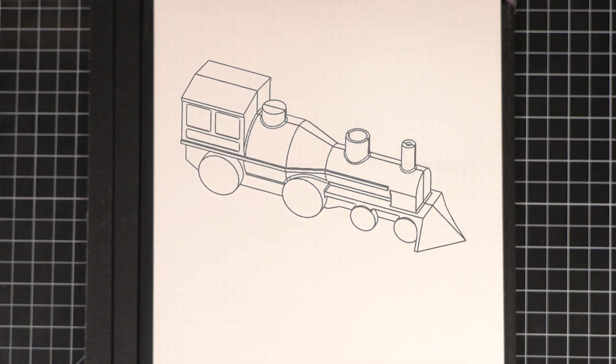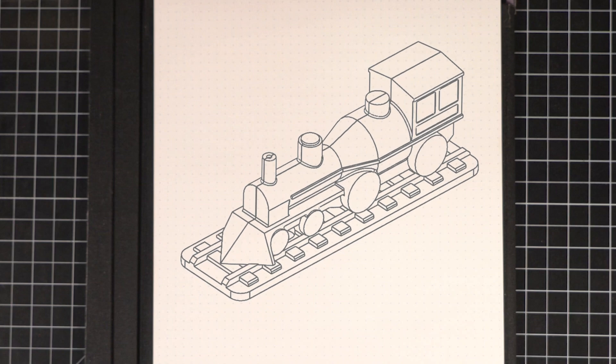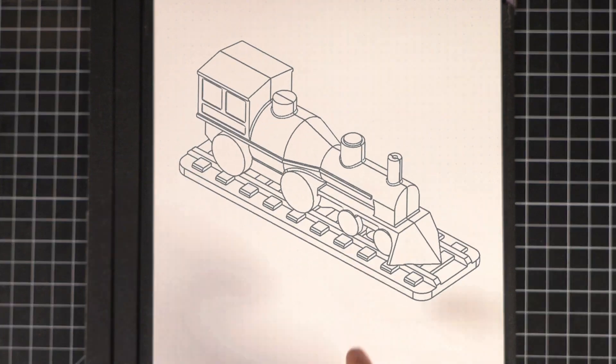Of course, a train needs railroad tracks to get anywhere, so I had to make those too. I also wanted to make it blow smoke rings at the press of a button.